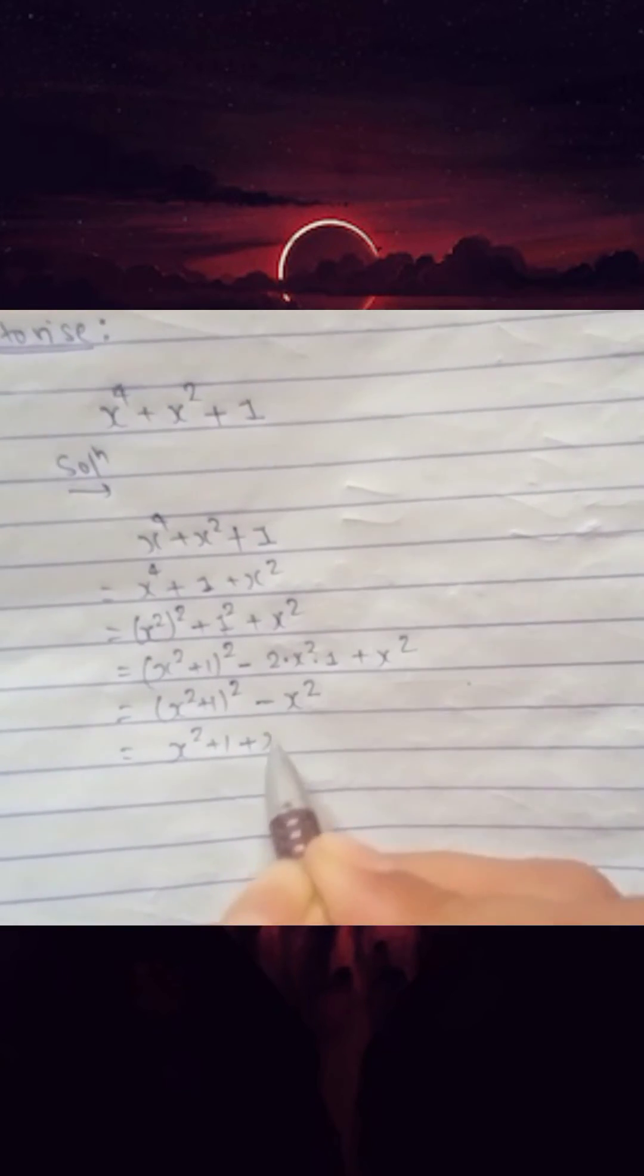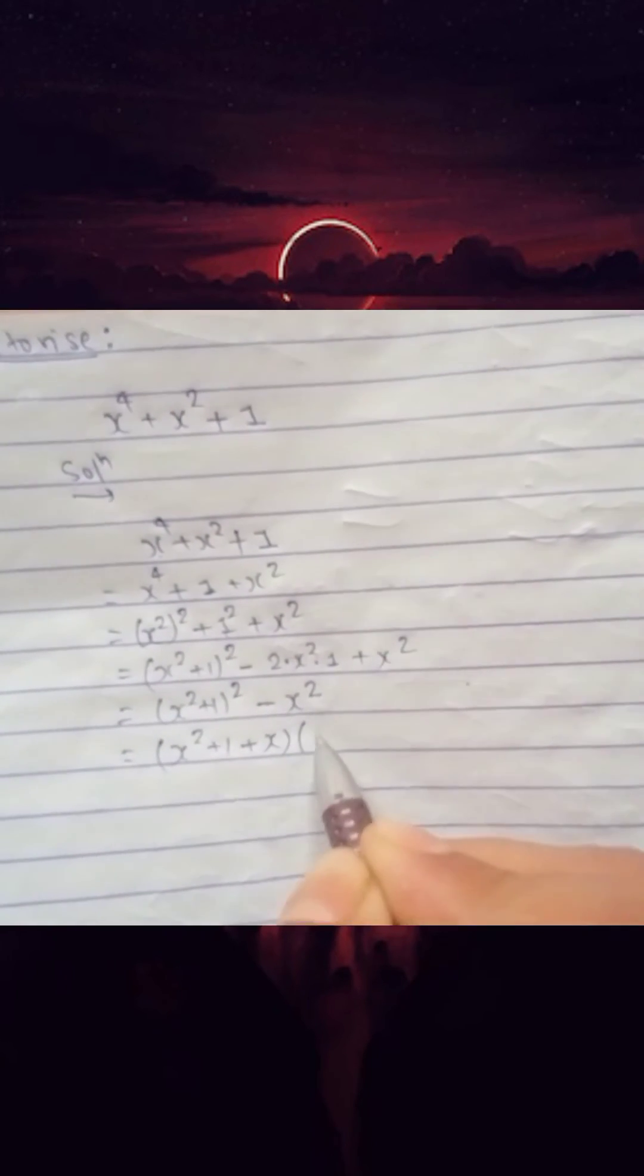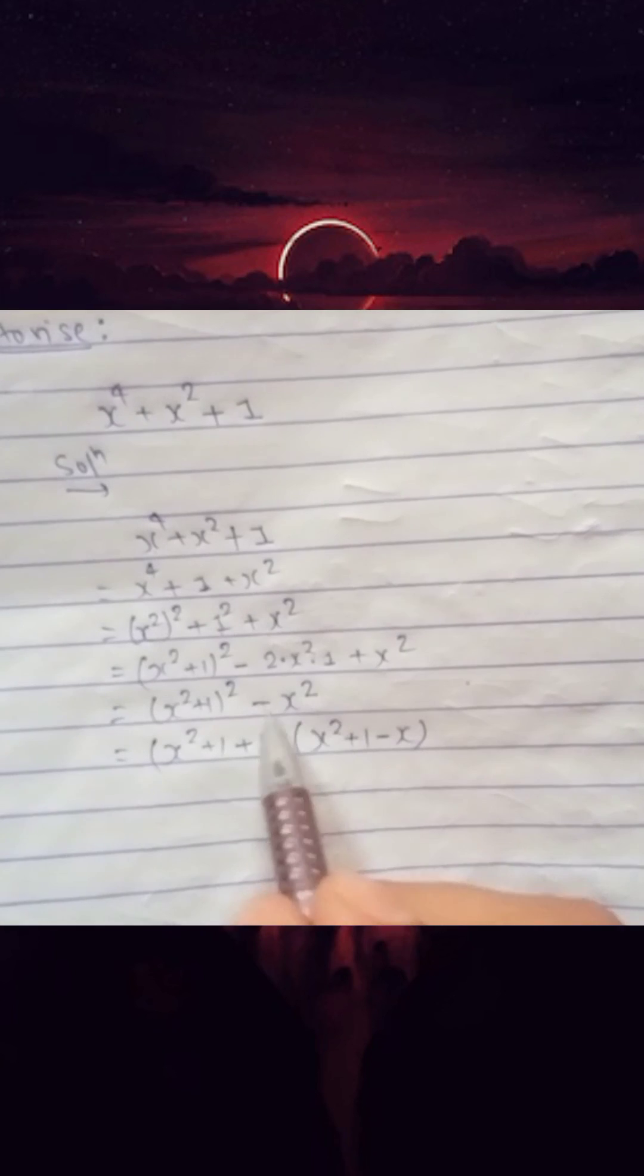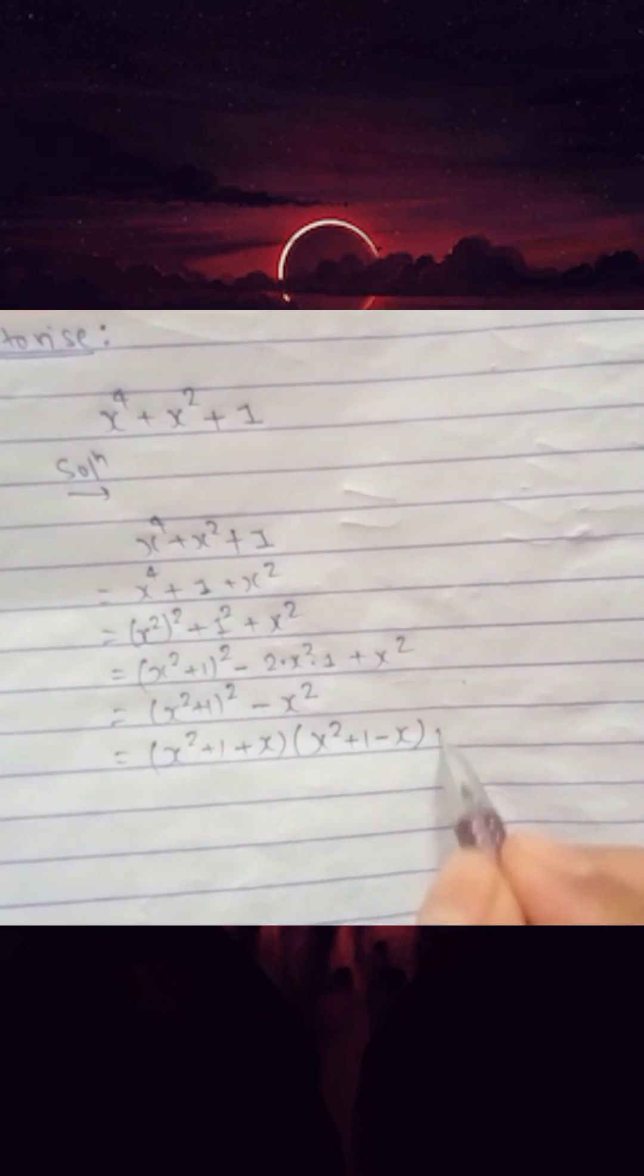a plus b times a minus b. Just use the formula a square minus b square by supposing x square plus 1 as a and x as b. Now you can see that's it.